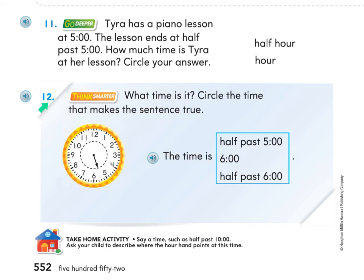When you're ready, move on to number twelve. It says what time is it — circle the time that makes the sentence true. Look at the clock and choose one of the three options and circle it. And then you're done! Great job with your math today, first graders!